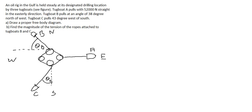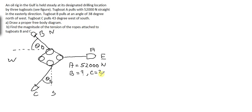Let us call all the tensions just A, B, and C. We can already state that we know tension A equals 52,000 N. B and C are what we need to find. We do know that theta B equals 38 degrees and theta C equals 43 degrees.